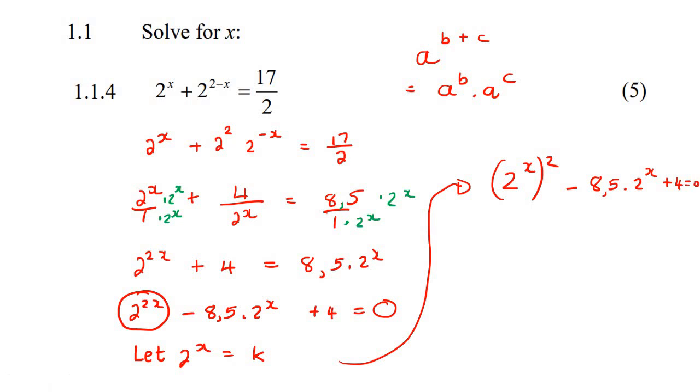So now we've got 2 to the x equals k, so I can go replace this, and I can go replace that with a k now. So that's going to be k squared minus 8.5 k plus 4 equals 0. Now, I'm just going to solve this as a normal trinomial now using the quadratic formula.